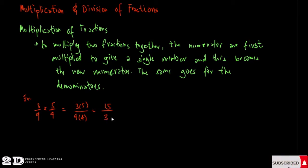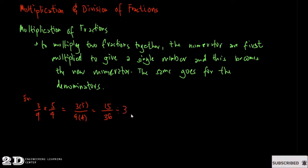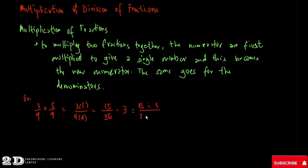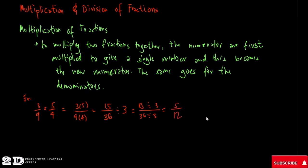So 3 times 5 is 15, and 9 times 4 is 36. If we are going to convert this to lowest terms, we divide the numerator and denominator by 3. So 15 divided by 3 over 36 divided by 3 gives us 5 over 12, and this is your answer.